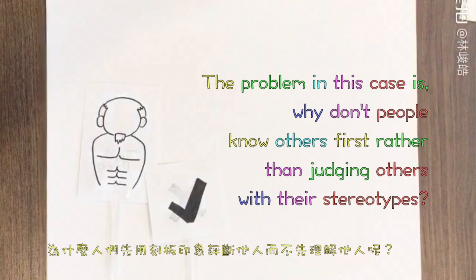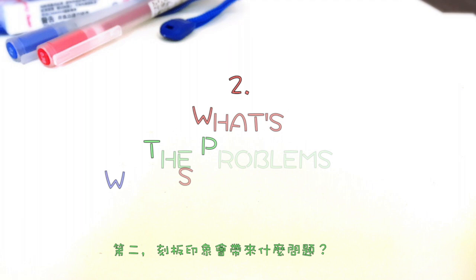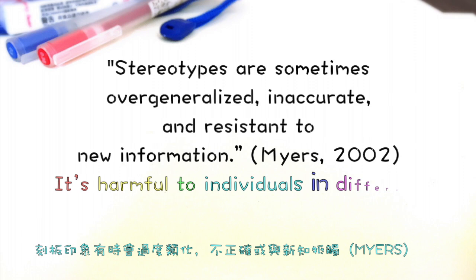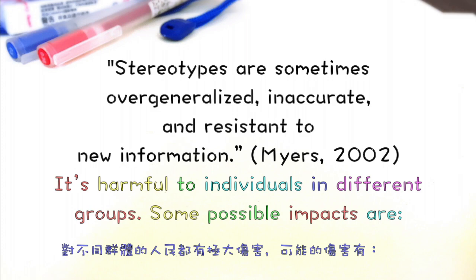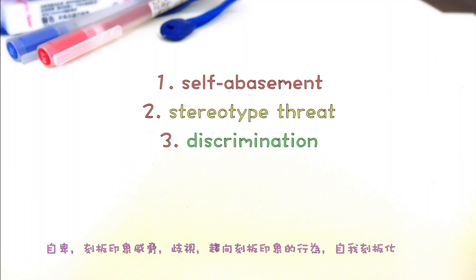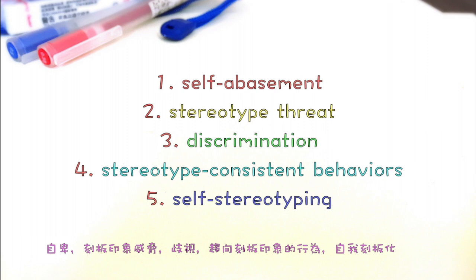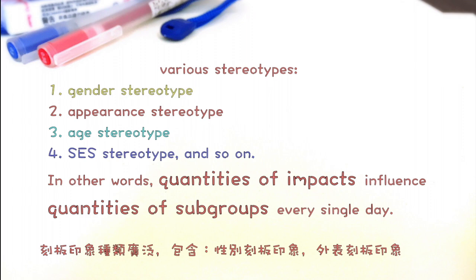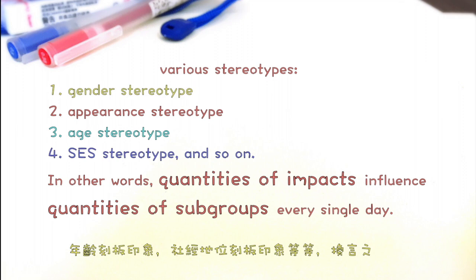Similar cases happen almost every day and everywhere. Second, what are the problems with stereotypes? Myers states that stereotypes are sometimes overgeneralized, inaccurate, and resistant to new information. It's harmful to individuals in different groups. Some possible impacts are self-abasement, stereotype threat, discrimination, stereotype consistent behaviors, and self-stereotyping. There are various stereotypes, such as gender stereotype, appearance stereotype, age stereotype, socioeconomic status stereotype, and so on. In other words, quantities of impacts influence quantities of subgroups every single day.